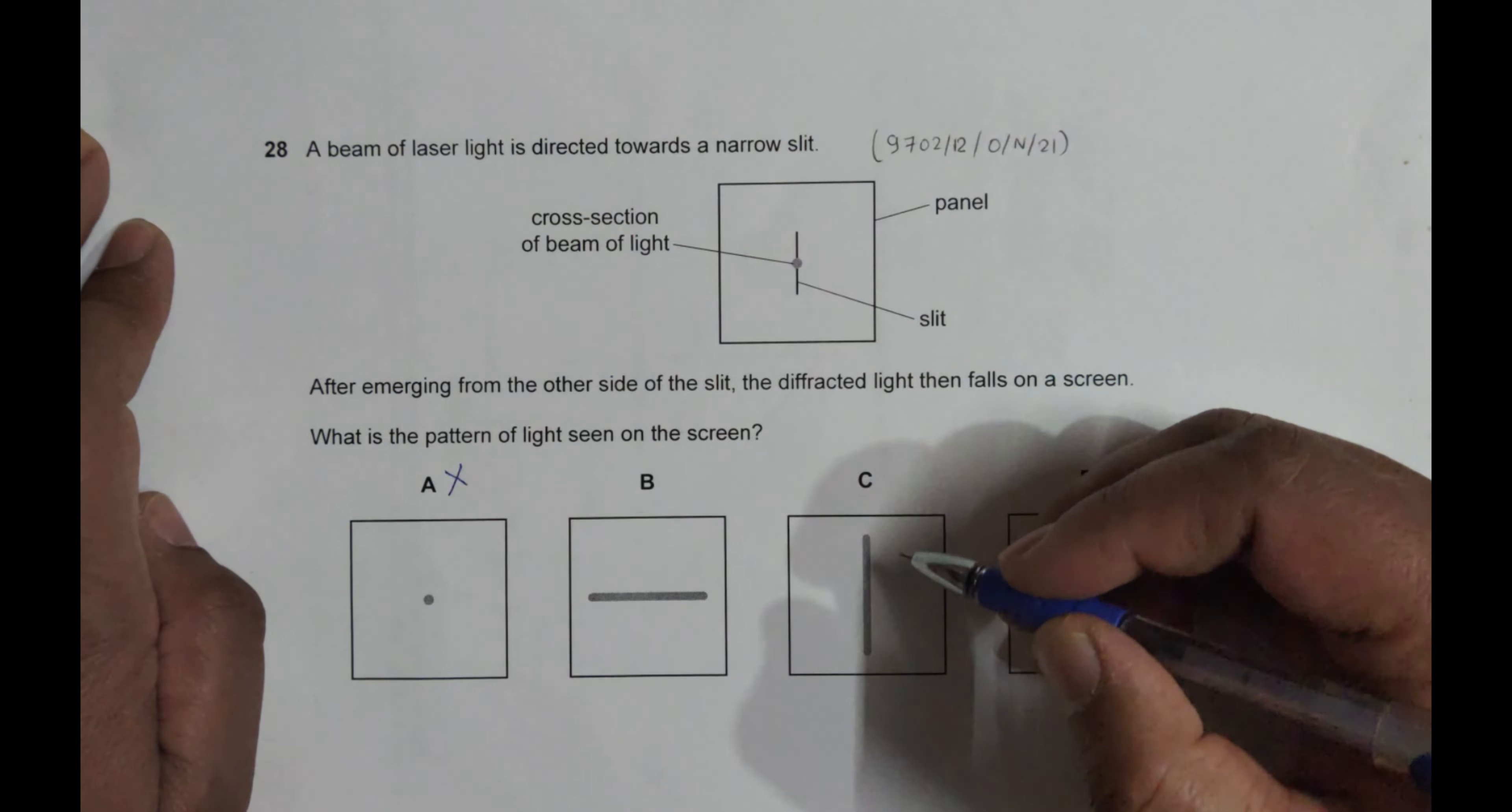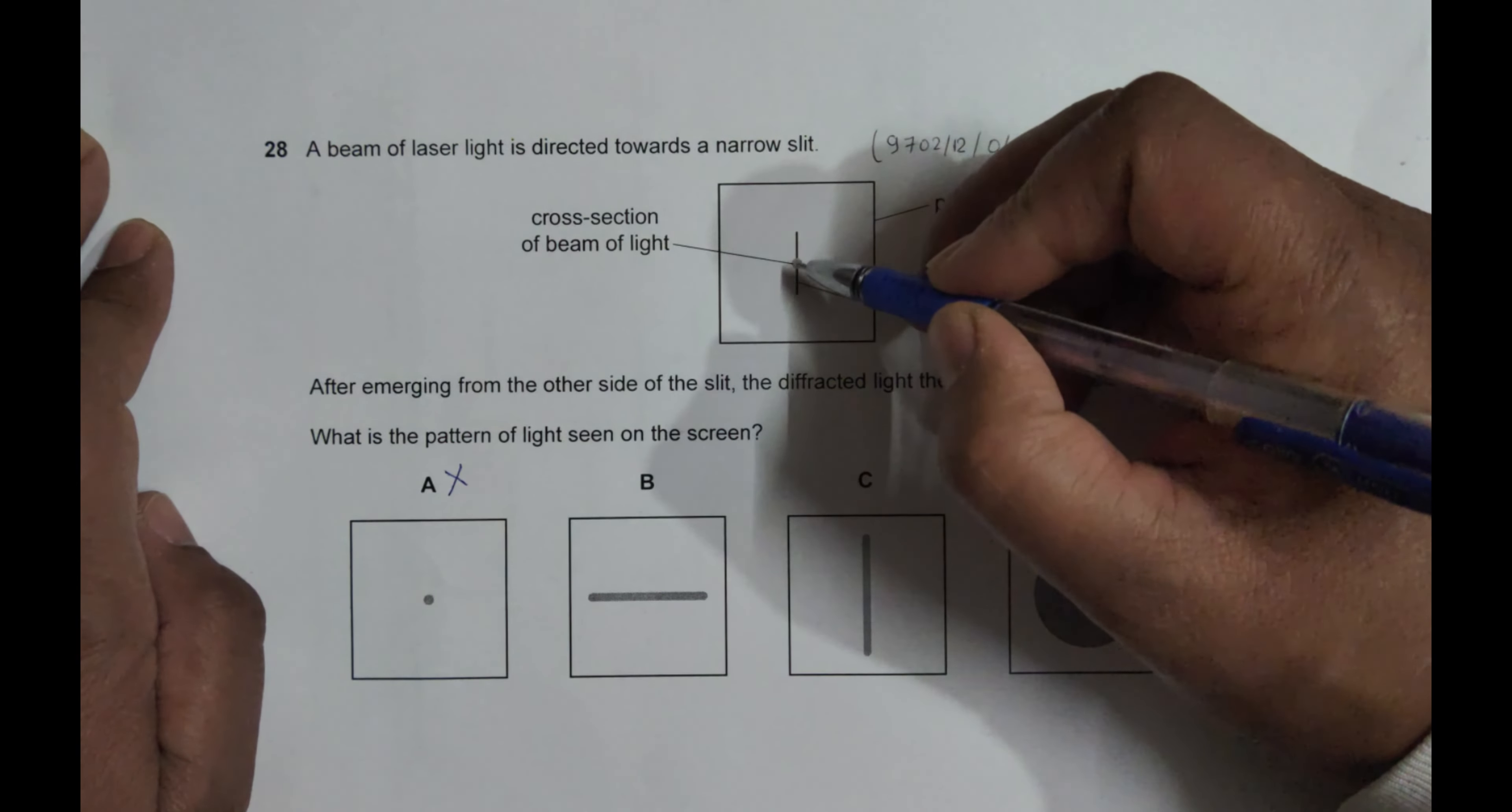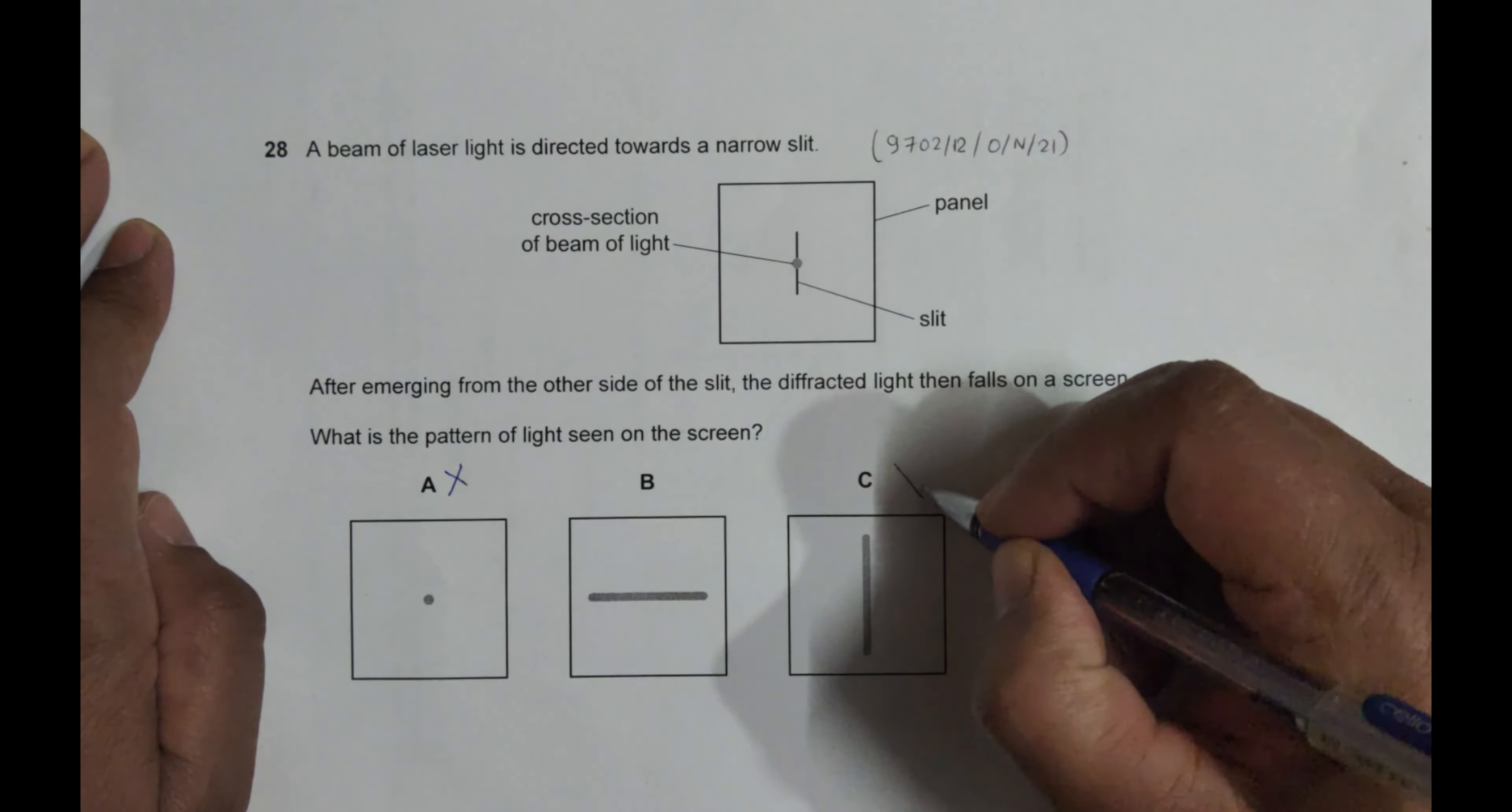Regarding choice C, it shows increase in the width in this direction also. That's not correct because in the length of the slit, there can be many, many wavelengths that can be adjusted. And so diffraction does not take place in this direction. So C is incorrect.